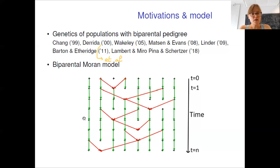In this work, we consider a biparental Moran model which is characterized by its fixed number, large N, of individuals. Time is discrete and at each time step, three individuals are chosen. Two of them are parents that produce a new offspring that replaces the third individual. This gives a pedigree graph in which gene genealogies will evolve.